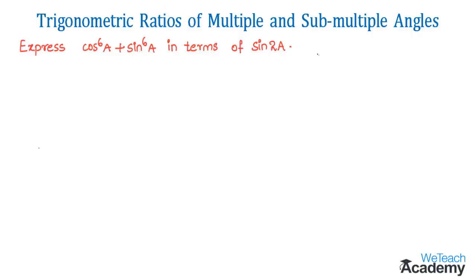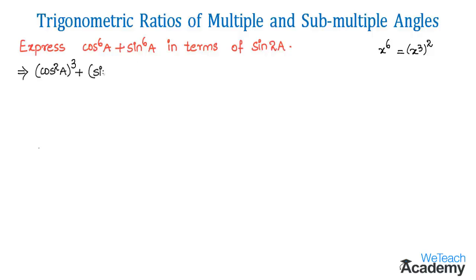We already know that x to the power 6 can be written as x cube whole square, or it can also be written as x square whole cube. Using this concept, let us write the given expression in the form of x square whole cube, giving us cos square a whole cube plus sin square a whole cube.